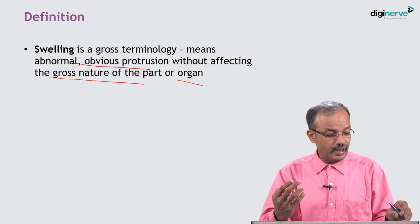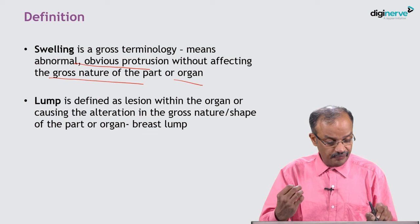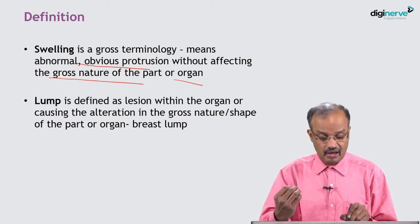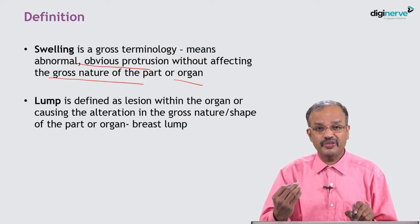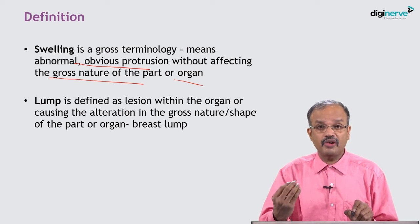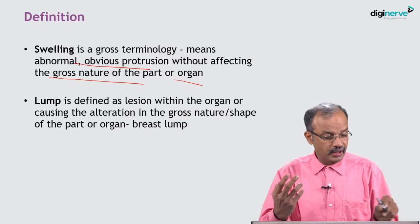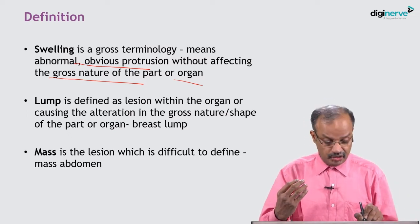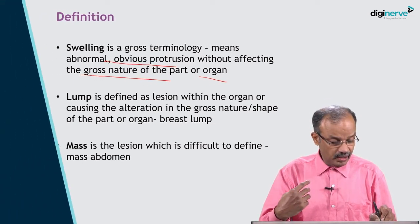Lump is defined as a lesion within the organ or causing alteration in the gross nature or shape of the part or organ — for example, a breast lump. There is a clinical difference between swelling and lump. Mass is similar to swelling but the difference is it is usually arising from the deeper plane. Mass is a lesion which is difficult to define, arising from the deeper plane — for example, mass abdomen.